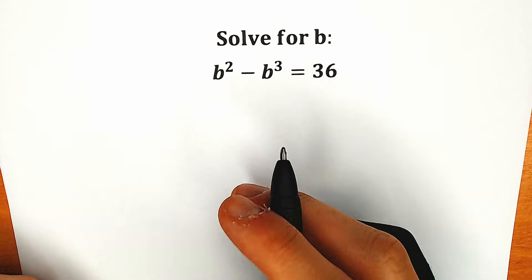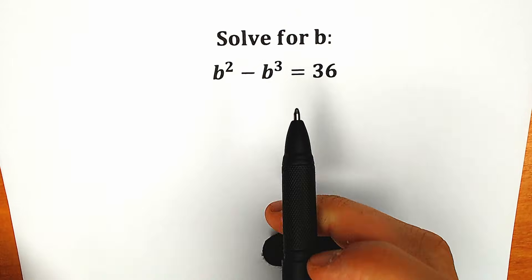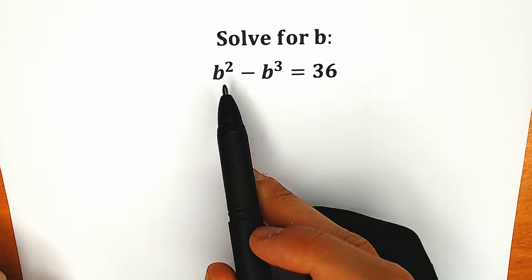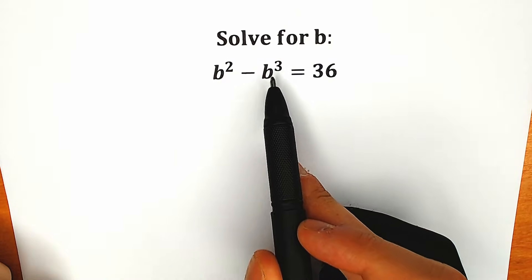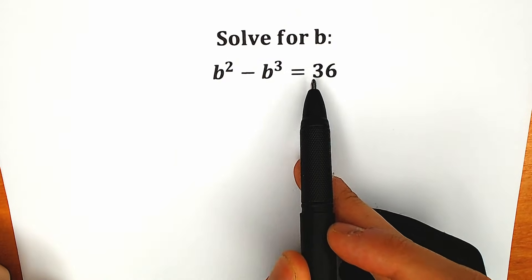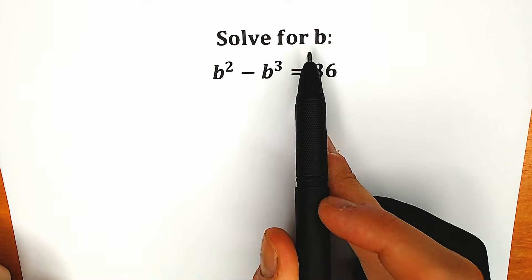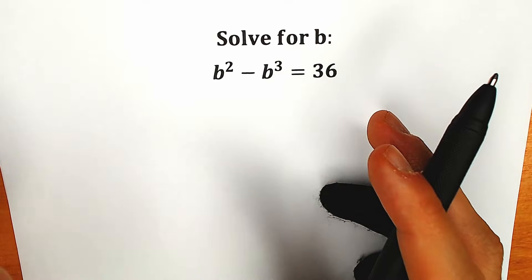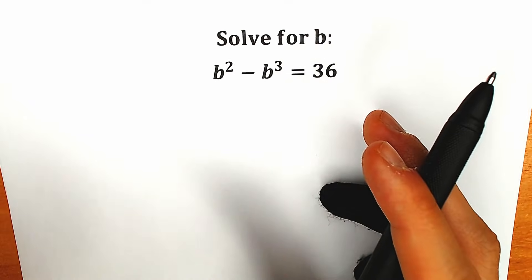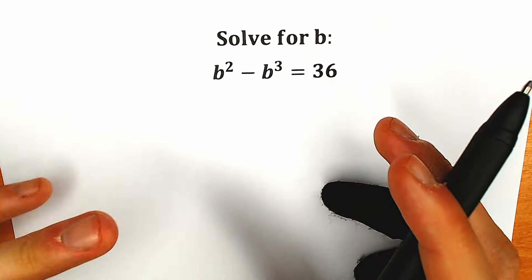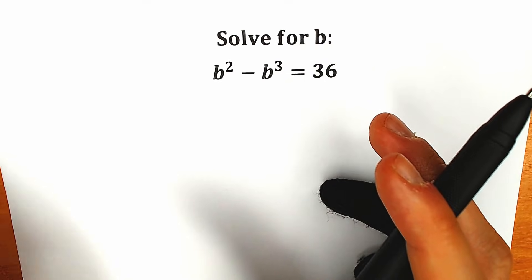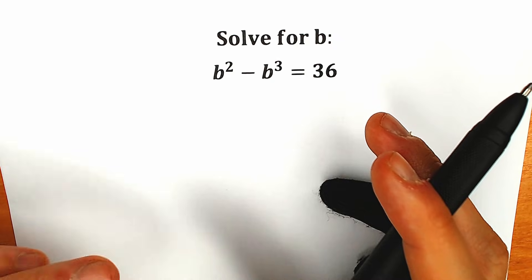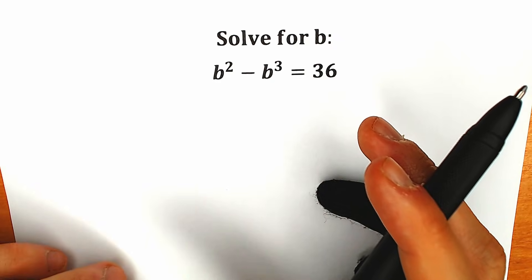Hello my friend, happy to see you here. Today we have a really interesting equation: b squared minus b cubed equals 36. We need to solve this equation for b. If you have your solution or assumption, you can write it in the comments below and we will check your answer.